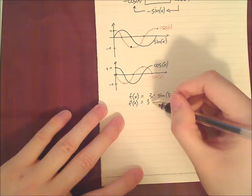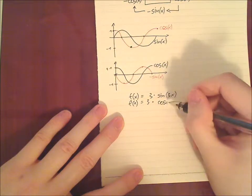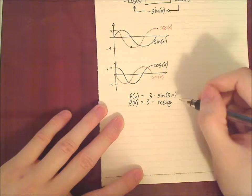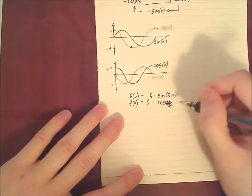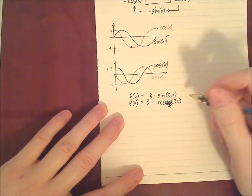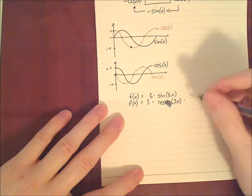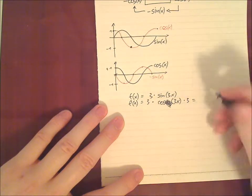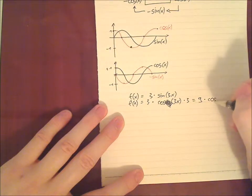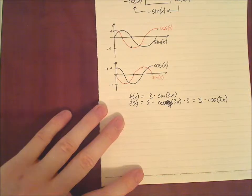So 3 times cosine, cosine, which is cosine, and 3x, this also remains, times, now don't forget the inner derivative, which is 3. So 3 times 3 is 9 times cosine 3x. There we have it. So it's actually not too difficult.